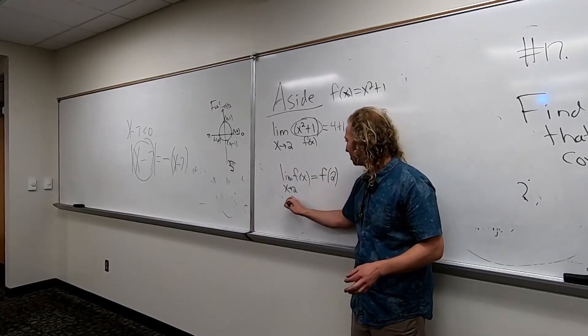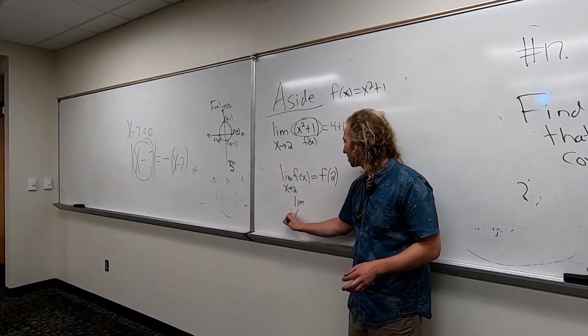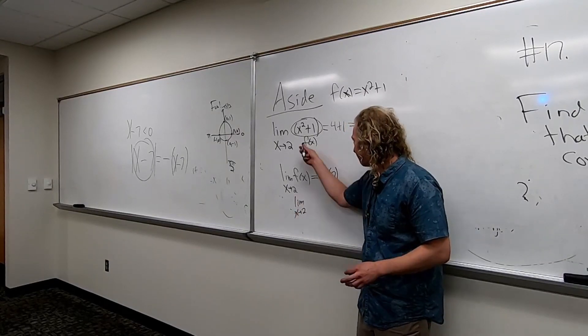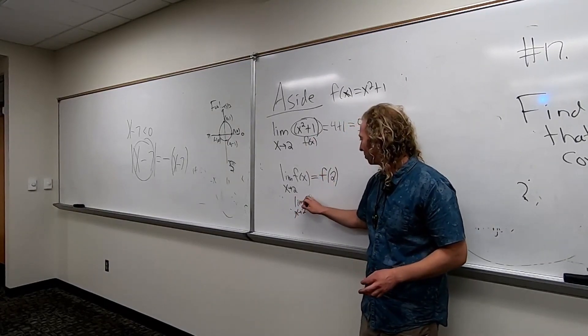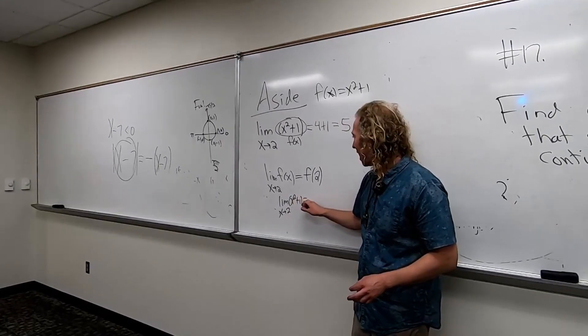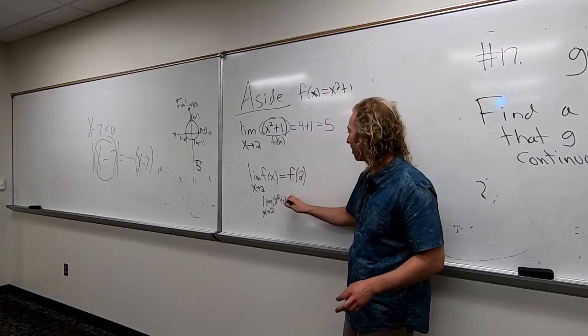But wait a minute. What is this? This is the limit as x approaches 2. f of x is what we have on the board, x squared plus 1. f of 2, we just did it up here. f of 2 is 5.